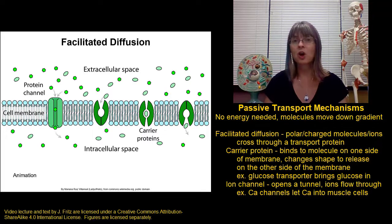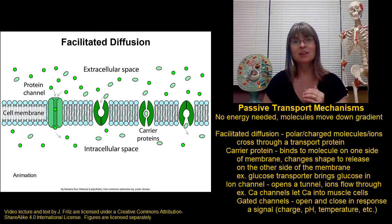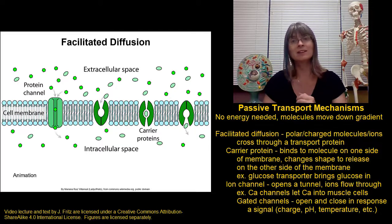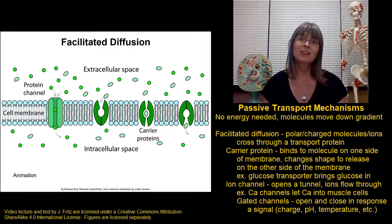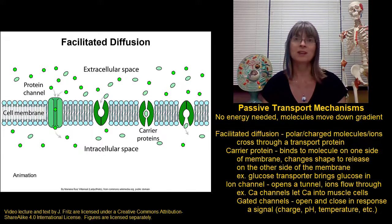Most ion channels aren't open all the time. Most ion channels are gated. What it means to be gated is that sometimes the ion channel is closed. And then when it receives a signal, the ion channel is open. And then a different signal might close the ion channel again. That allows the cell to regulate when the ions can flow through and when they don't.